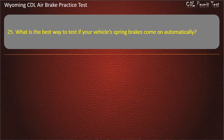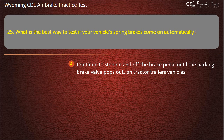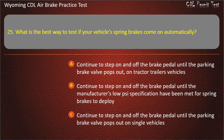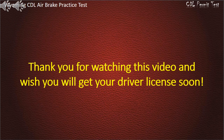Question 25. What is the best way to test if your vehicle's spring brakes come on automatically? Continue to step on and off the brake pedal until the parking brake valve pops out on tractor-trailer vehicles. Continue to step on and off the brake pedal until the manufacturer's low-pressure specification has been met for spring brakes to deploy. Continue to step on and off the brake pedal until the parking brake valve pops out on single vehicles.